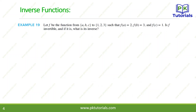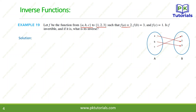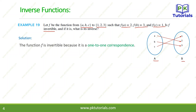For example, consider the function from {A, B, C} to {1, 2, 3}. This is set A and set B. The conditions given are: f of A = 2, f of B = 3, and f of C = 1. Is f invertible? First you have to know whether it is invertible or not. The function is invertible because it is one-to-one correspondence.